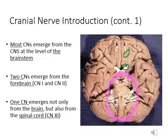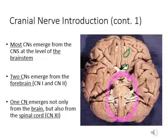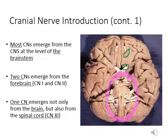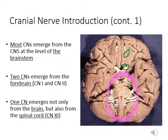This picture shows the inferior view of the brain. Two cranial nerves emerge from the forebrain: cranial nerve 1 and cranial nerve 2. The purple circle shows that most of the cranial nerves emerge from the level of the brainstem. You can also see that the lower part of the brainstem connects with the spinal cord. Cranial nerve 11 is unusual because part of it also comes from the spinal cord.